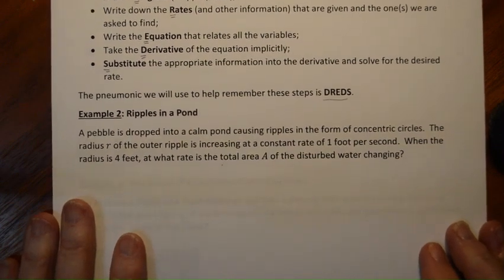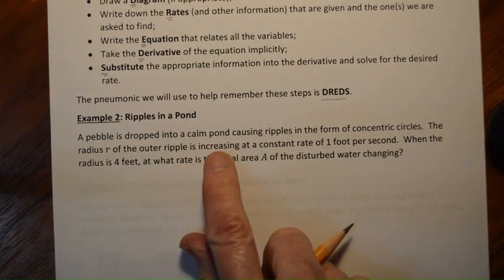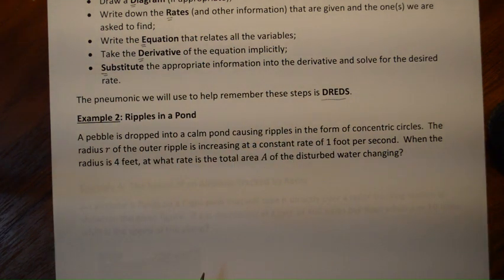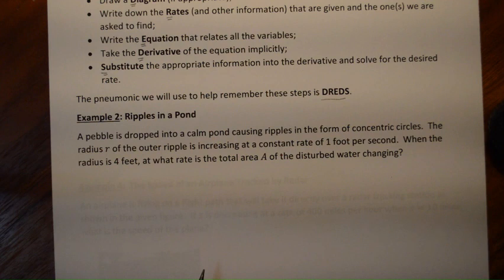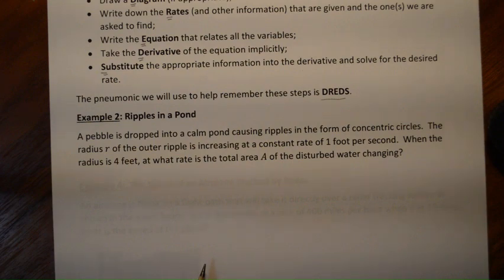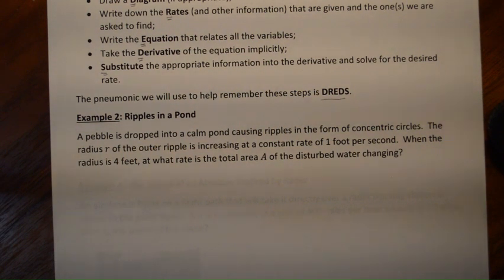Let's take a look at Example 2: ripples in a pond. A pebble is dropped into a calm pond causing ripples in the form of concentric circles. The radius r of the outer ripple is increasing at a constant rate of one foot per second. When the radius is four feet, at what rate is the total area of the disturbed water changing? You might want to pause and read that again because there's a lot of information in there.